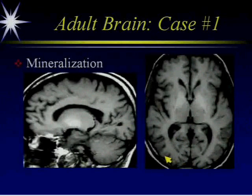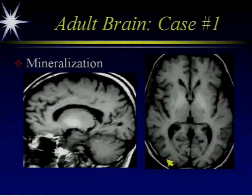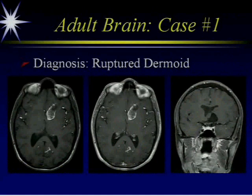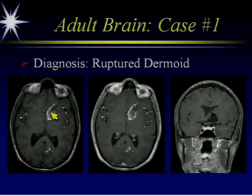Knowing that this is lipid, this was a ruptured dermoid. The original images shown were without contrast. On the contrast images we can see enhancement in the dural sinus and the cord axis. The best way to nail this diagnosis is to do a fat sat, and here on the fat-saturated post-gadolinium image we can see enhancement in the cavernous sinuses and pituitary, and the lesion completely saturates out — confirming it is definitely lipid.